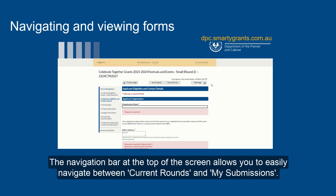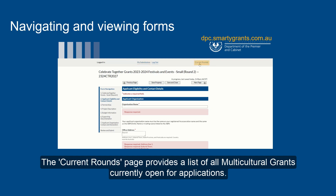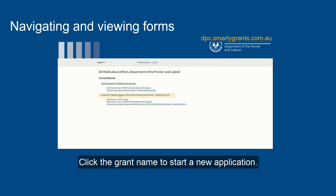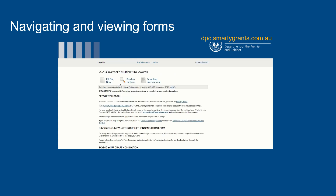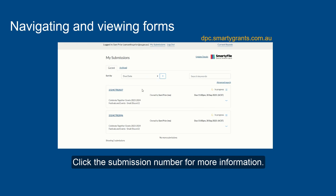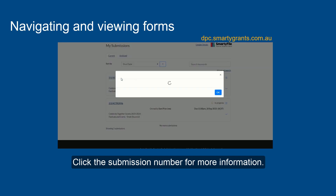The navigation bar at the top of the screen allows you to easily navigate between Current Rounds and My Submissions. The Current Rounds page provides a list of all multicultural grants currently open for applications — click the grant name to start a new application. The My Submissions page provides a list of all current and archived submissions — click the submission number for more information.